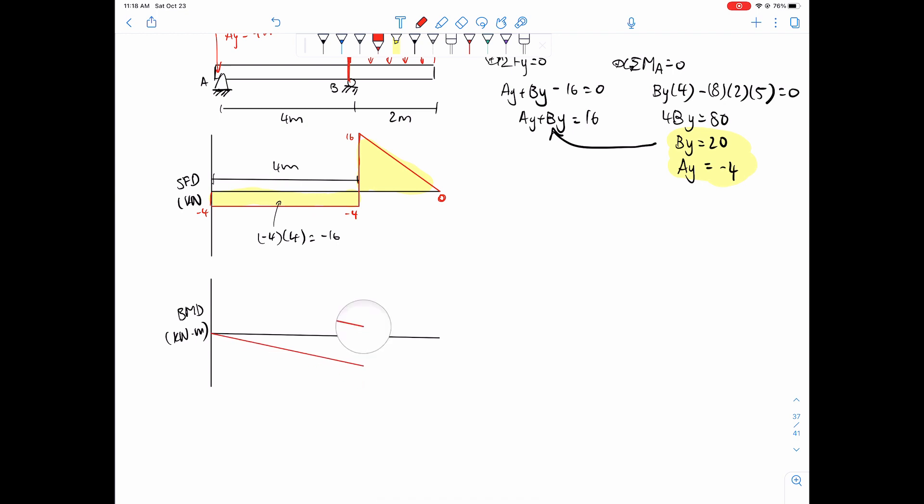So this is negative 4 times by 4. This distance is 4, this distance. So that equals negative 16. So go from 0, since it's a rectangle, go down 16. And then this area, we have 16 times 2, the distance from here to here, and because it's a triangle, times it by 1/2, that's the area. That equals 16.